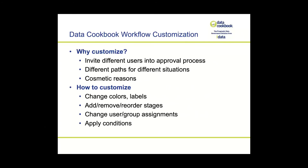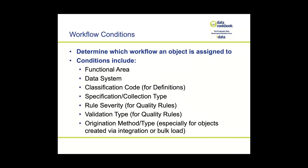It is pretty common for an organization to need at least two different approval paths for an object. Definitions, for example, can often proceed in a straightforward manner, but some need additional oversight. A good way to accomplish this is to apply a workflow condition to the entire workflow. When an object meets that condition, it goes through that particular workflow; objects not meeting those conditions go through other workflows. Depending on the object you're working with, you have a variety of different conditions available.